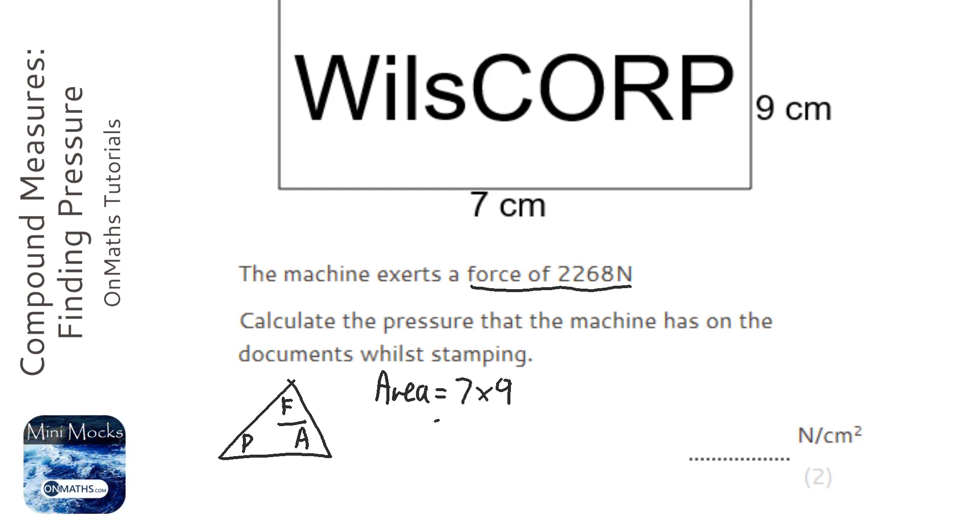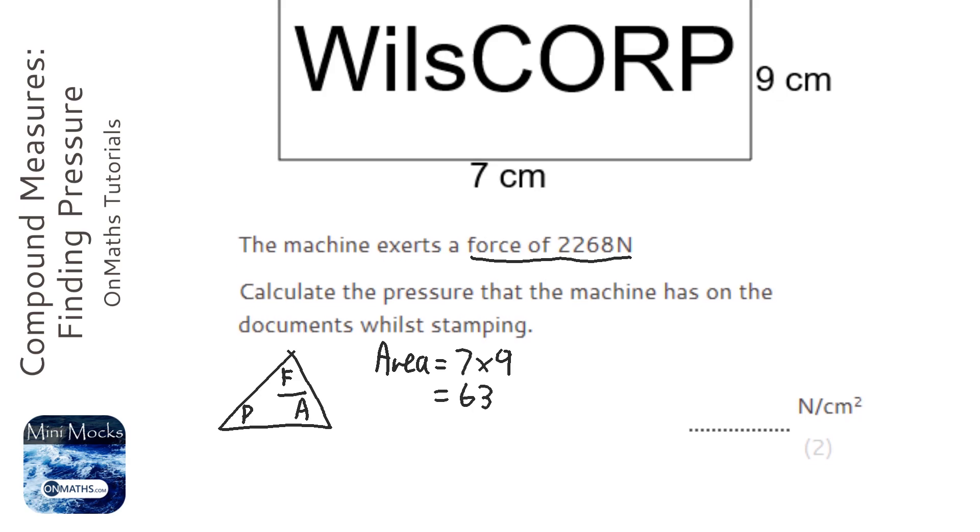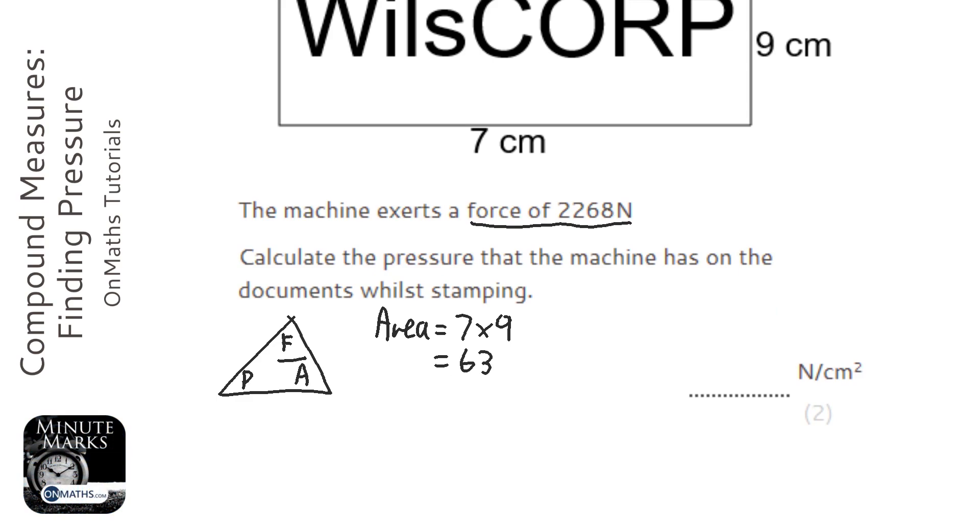7 times 9 which is 63 centimeters squared, and the force is 2268. So pressure equals the force over the area, so I can use my calculator: 2268 divided by 63.